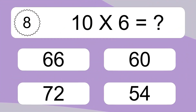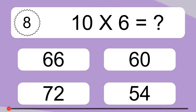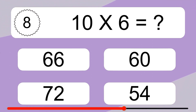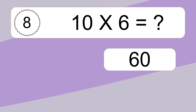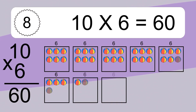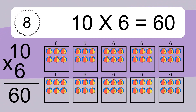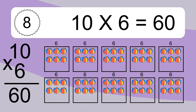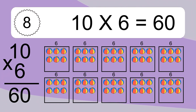10 times 6 equals what? 60. We have 10 boxes, and each box has 6 colorful balls inside. If you count all the balls in all the boxes together, you will have 10 times 6 balls. This equals 60 balls.